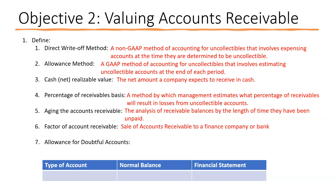Factoring accounts receivable is the sale of receivables to a finance company or bank. They buy your receivables, pay you cash, and you pay a service charge. The bank or finance company then owns the receivables and your customers pay them instead. It's increasingly common because customers want longer payment terms, so sellers factor to get cash earlier.